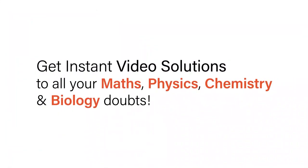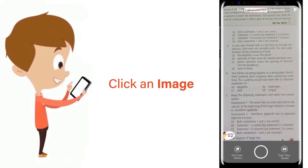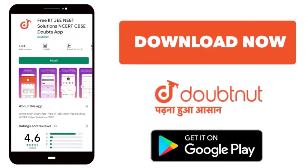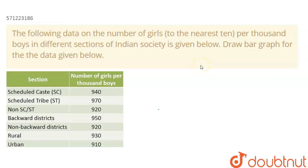With Doubtnet, get instant video solutions to all your math, physics, chemistry, and biology doubts. Just click the image of the question, crop the question, and get instant video solution. Here we have the question which says: the following data on the number of girls to the nearest ten per thousand boys in different sections of society is given below, and we need to draw the bar graph for the data given below.